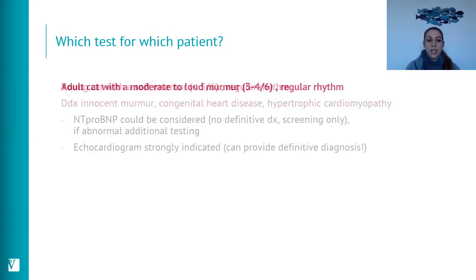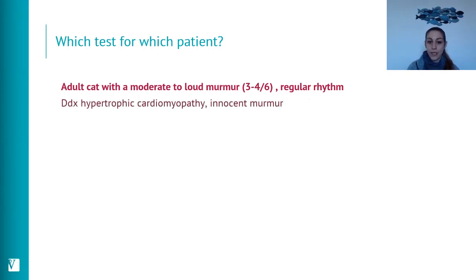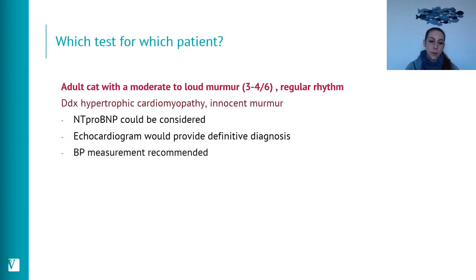Scenario 8: an adult cat with a moderate-to-loud murmur and regular rhythm. The most likely differentials are hypertrophic cardiomyopathy or another cardiomyopathy, or an innocent murmur. NT-proBNP greater than 100 pmol/L can indicate underlying cardiomyopathy, but echocardiography will definitively show whether there is abnormal thickening of the LV walls, which NT-proBNP cannot determine. Blood pressure measurement is recommended to rule out concurrent comorbidities.